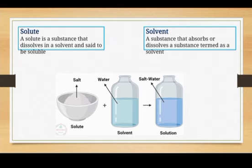So what is a solute? A solute is a substance that dissolves in a solvent and is said to be soluble. Salt can be a solute because it is easily dissoluble and soluble in a solvent. And what is a solvent? A solvent is a substance that can dissolve another substance in it.